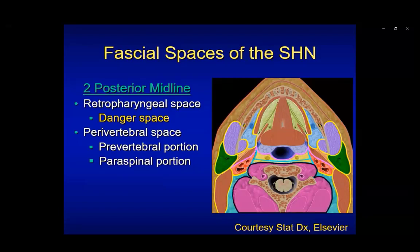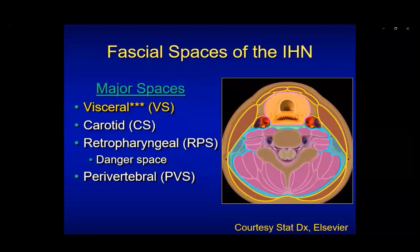The perivertebral space has prevertebral and perispinal portions. The infrahyoid neck contains three spaces that cross the hyoid divide — the carotid, retropharyngeal, and perivertebral spaces. The visceral space is the only space present only within the infrahyoid neck, and it's surrounded by the middle layer of deep cervical fascia in pink.